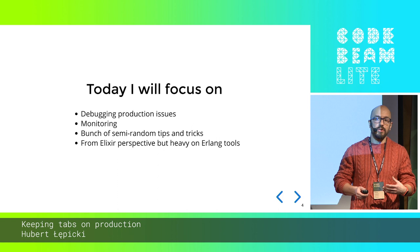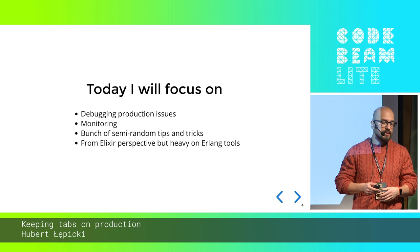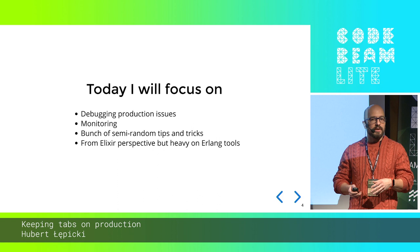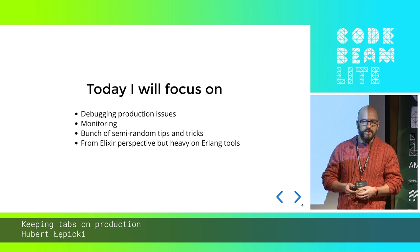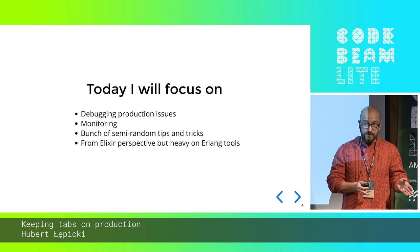Today we're going to focus on debugging production issues and discussing various things related to production deployments and monitoring. It's going to be a bunch of random tips and tricks — things that Erlang developers will know and think is basic stuff, but Elixir developers not necessarily. Hopefully that's going to be useful for at least part of the people here.